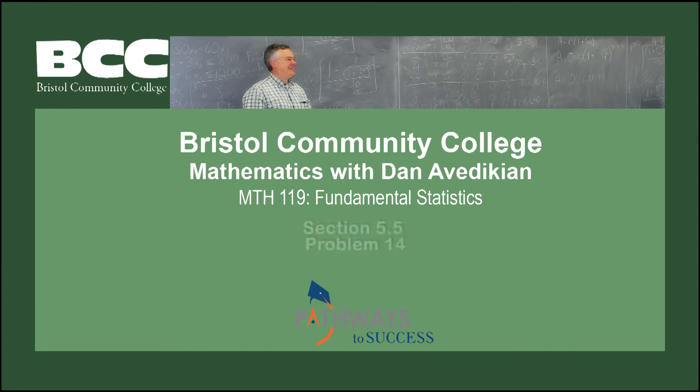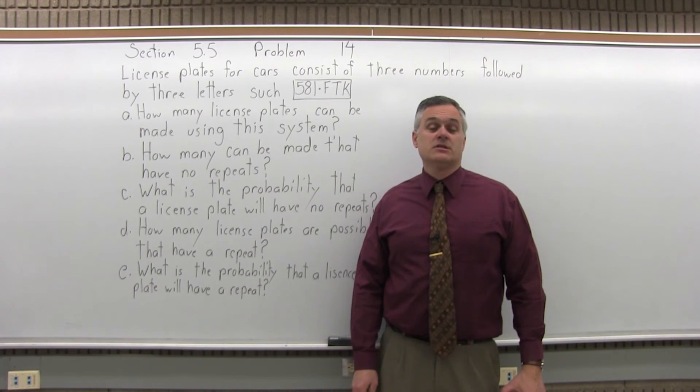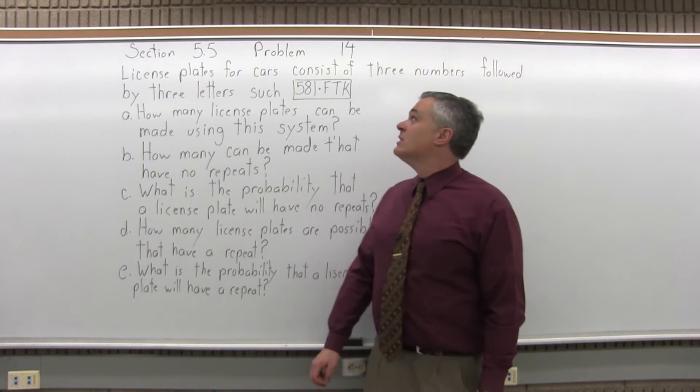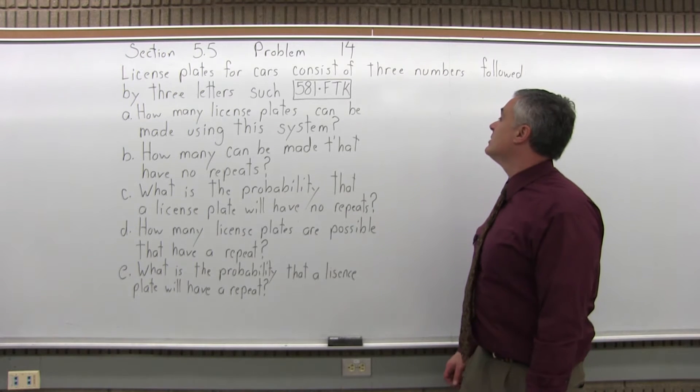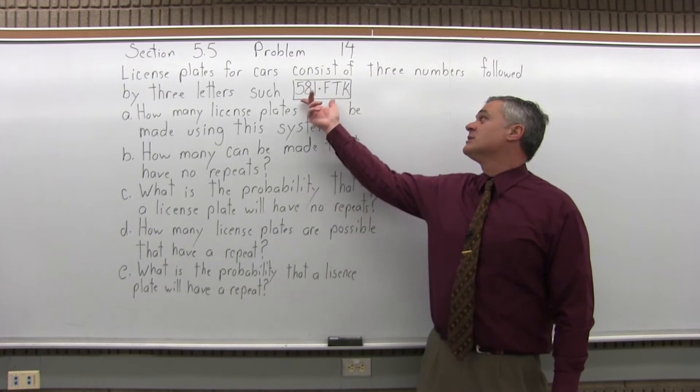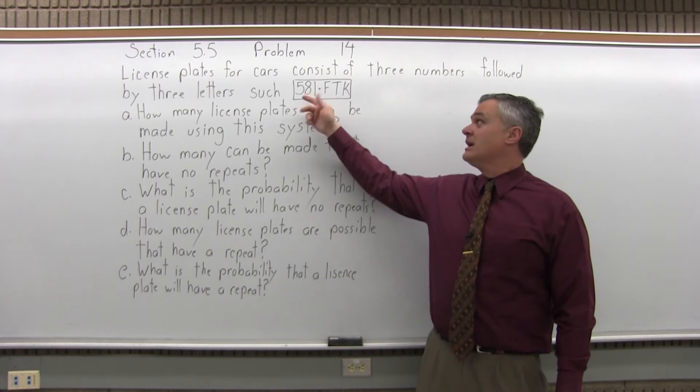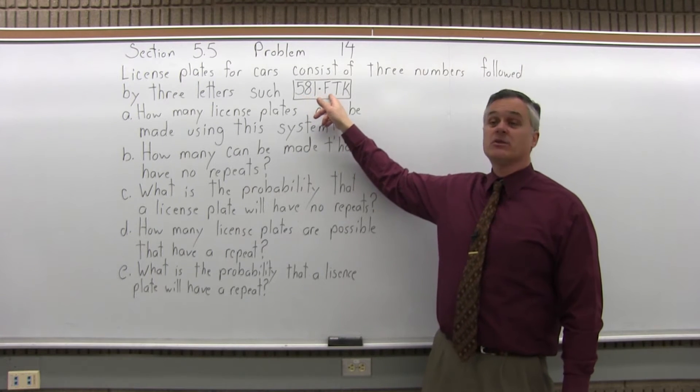Bristol Community College, Mathematics with Dan Avadikian, Math 119, Fundamental Statistics, Section 5.5, Problem 14. This is Section 5.5, Problem number 14. It says license plates for cars consist of three numbers followed by three letters, such as a license plate like 581 FTK. You have three numbers followed by three letters.